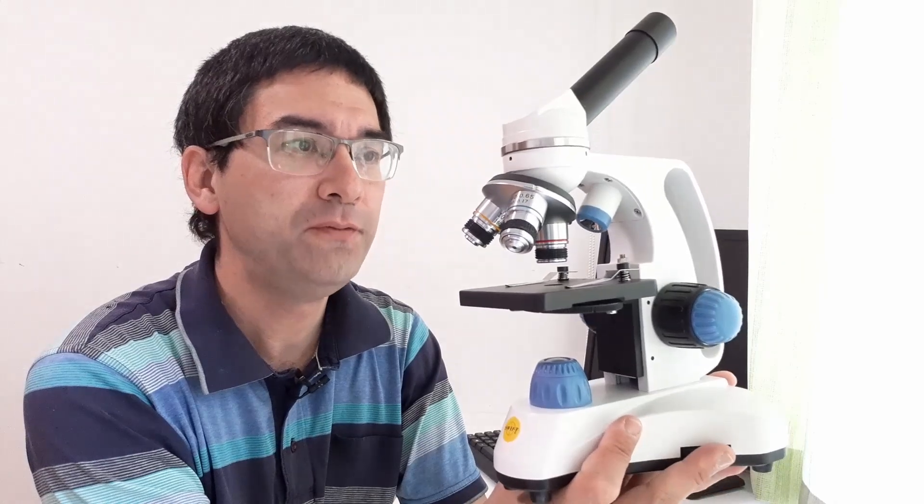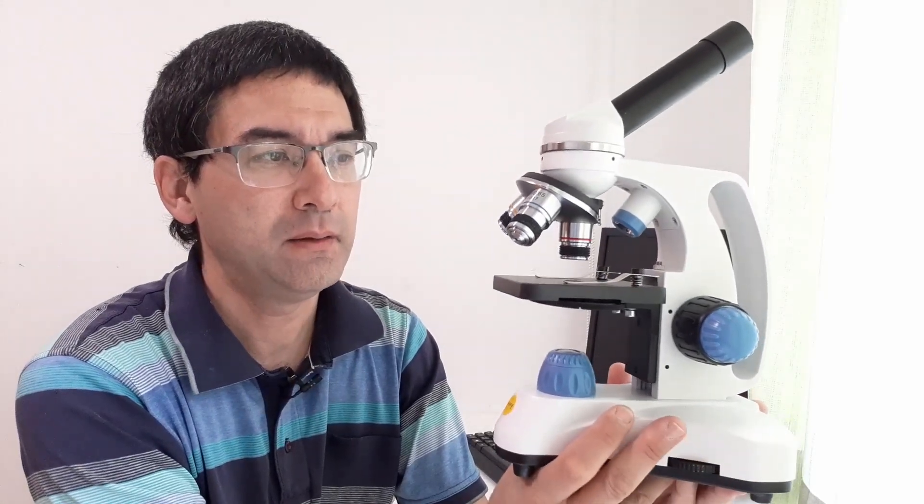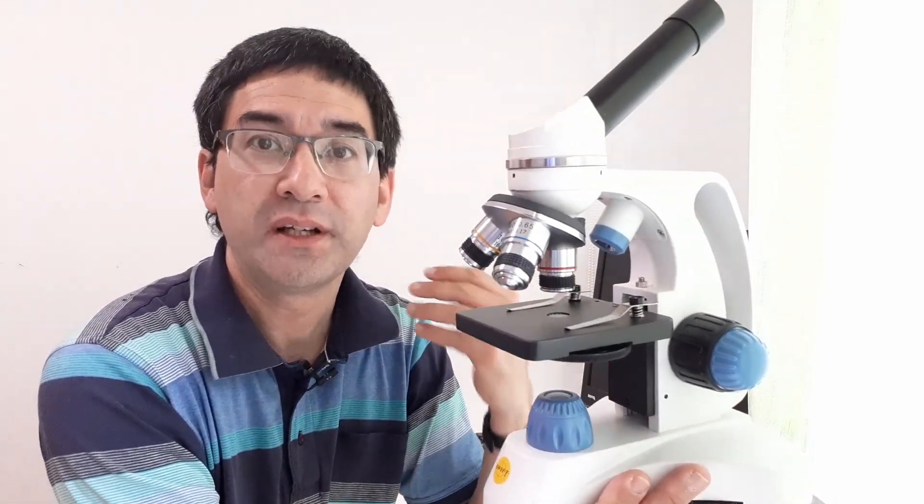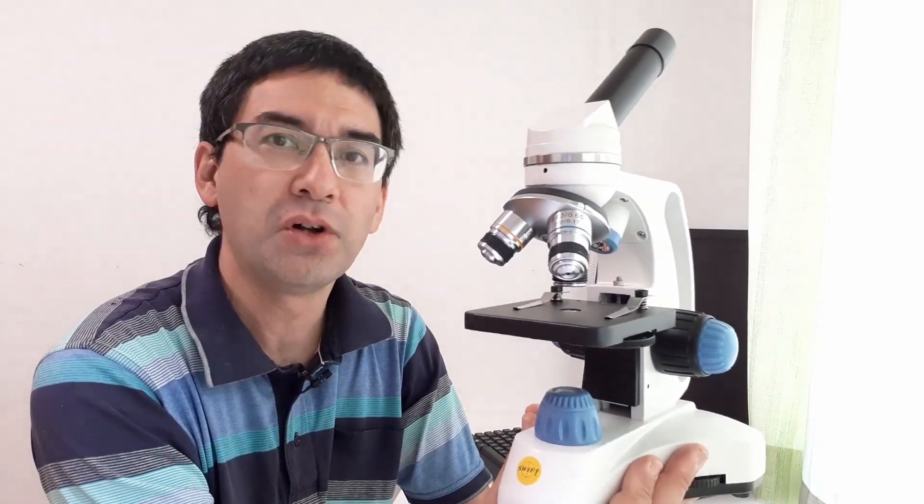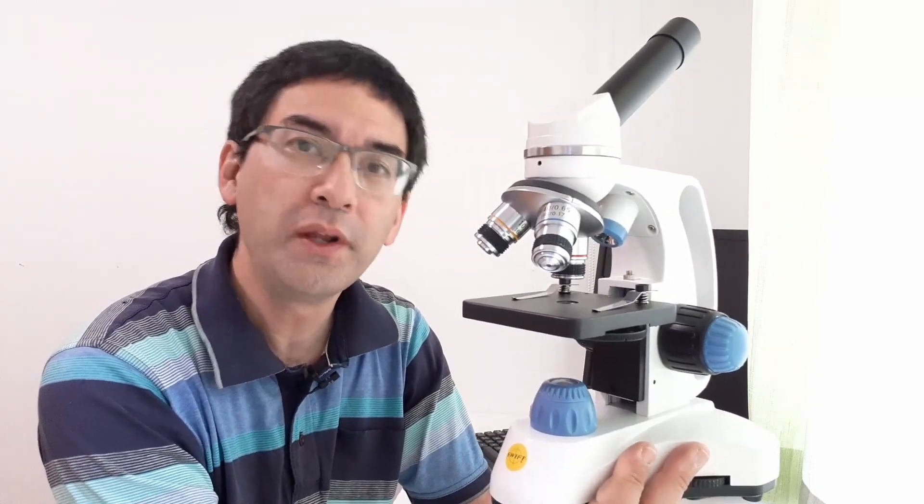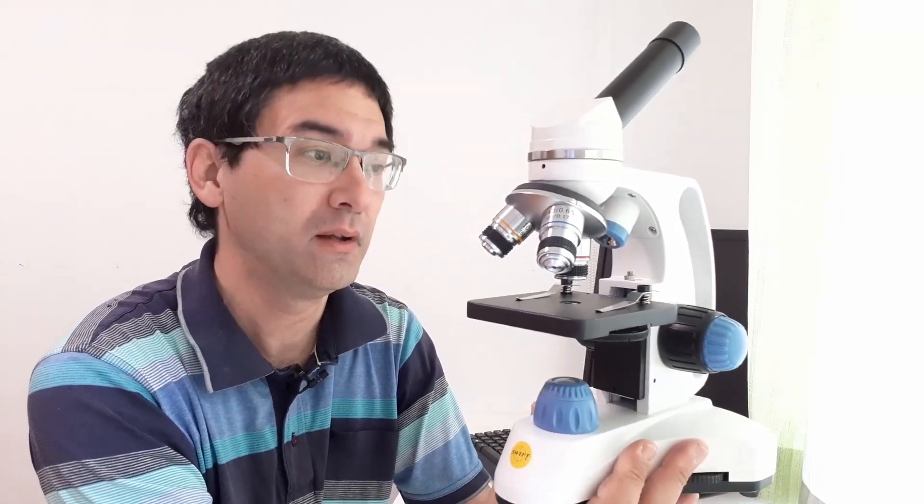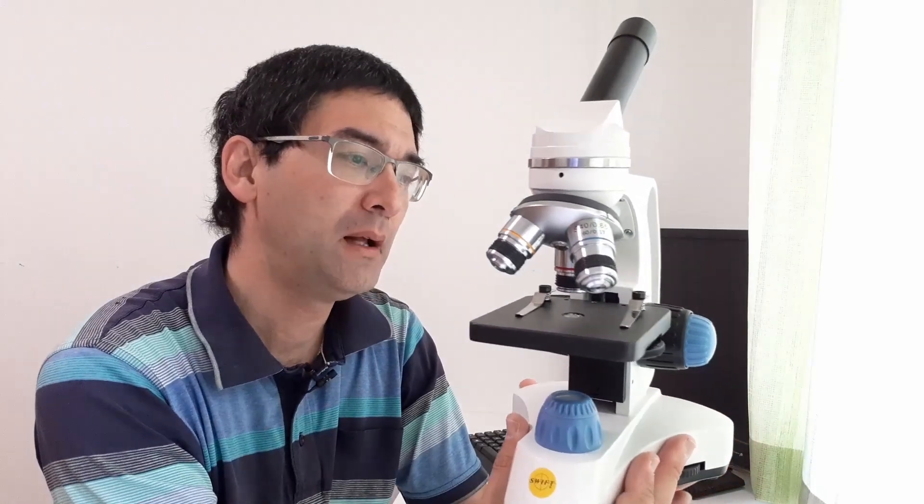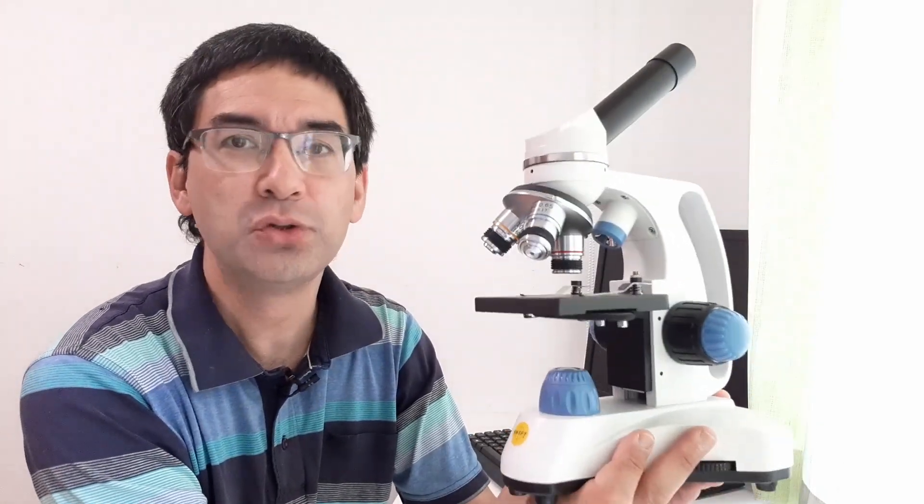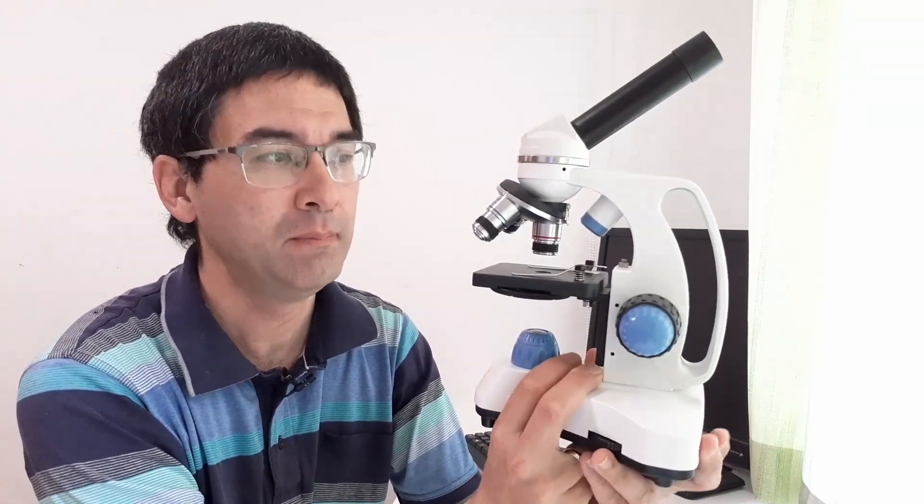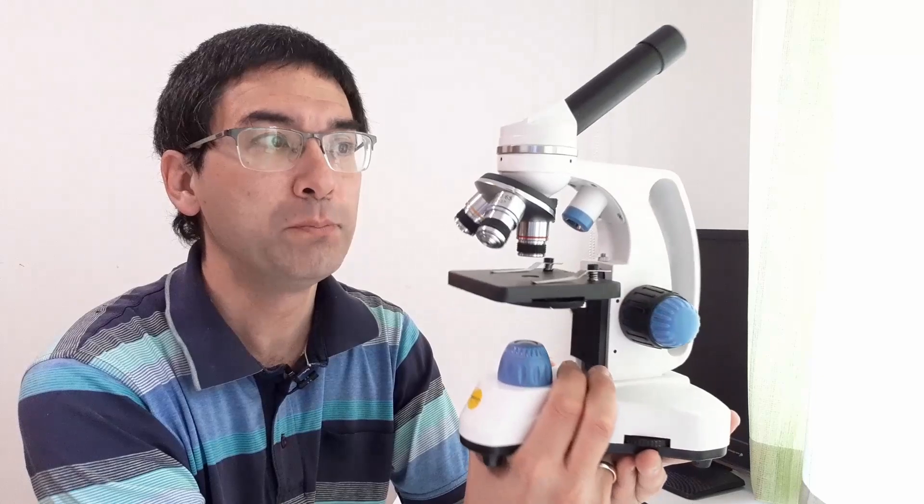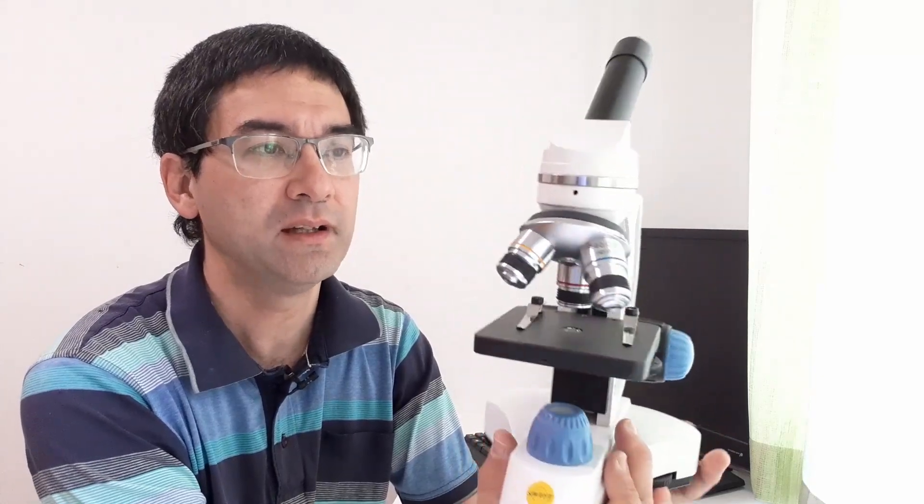First of all, this microscope is called the Swift SW150 and it belongs to the category that I call introductory microscope. I say introductory because I want to distinguish it from the so-called toy microscopes. It's not a toy because simply the image quality is too good and there is a lot of metal. It's made mostly of metal.